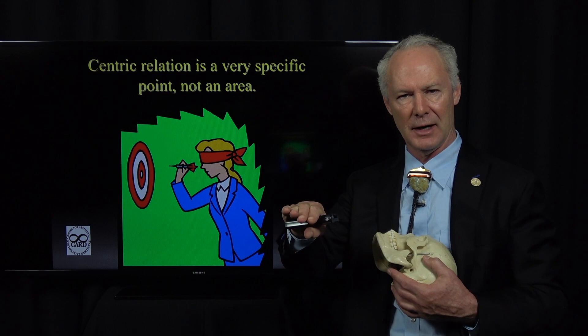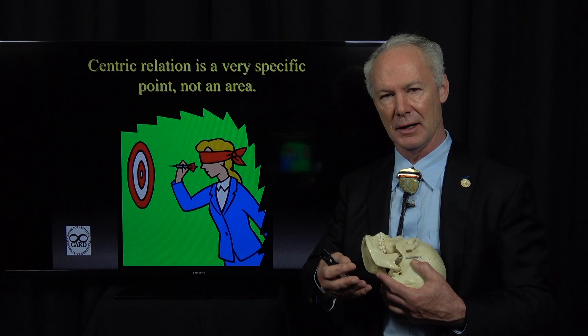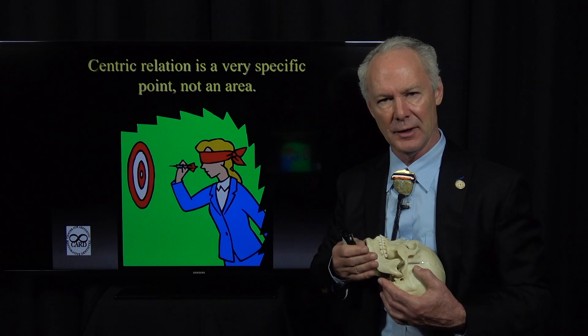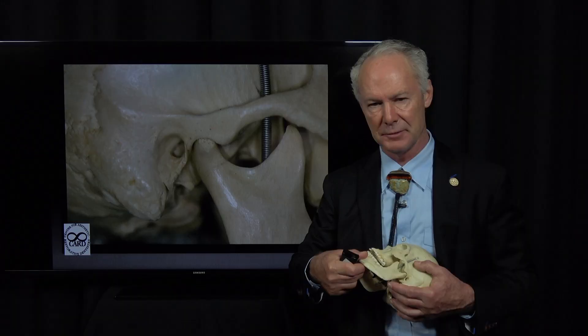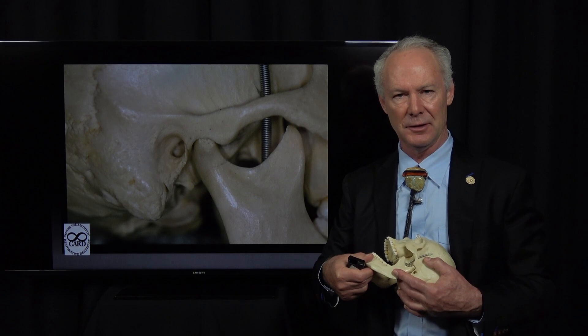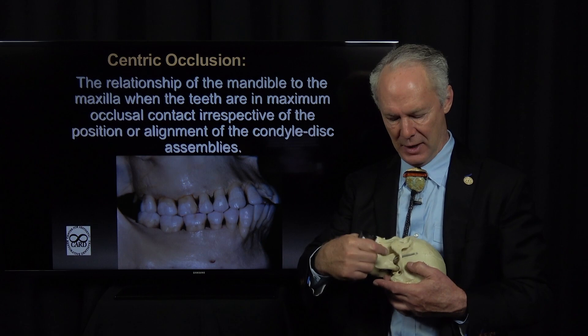Occlusion is no different than the foundation of a house. You wouldn't want to rebuild or build a house on a bad foundation. You wouldn't want to remodel a house on a bad foundation. You want to set the foundation first. That's what occlusion is. And this is centric relation — the condyle is maximally seated in the fossa. It has nothing to do with tooth position.